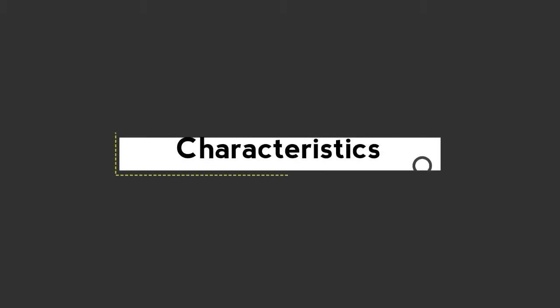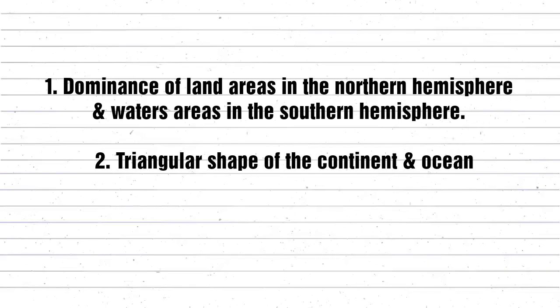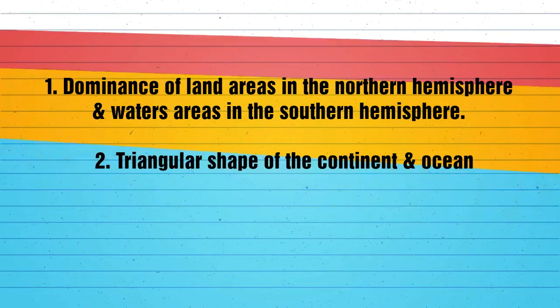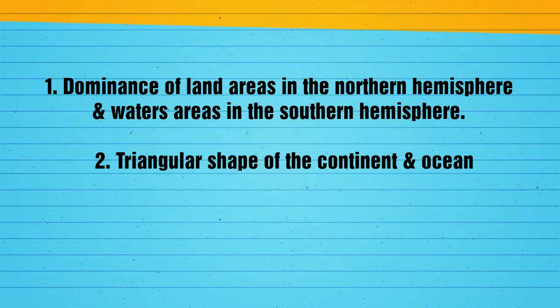In this hypothesis, there are some characteristics of the distributional pattern of land and water over the globe. These are: first, the dominance of land areas in the northern hemisphere and water areas in the southern hemisphere. Second, triangular shape of the continents and oceans.